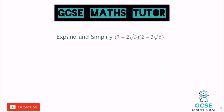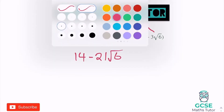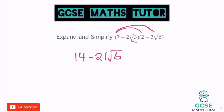Let's look at another one. Expanding: 7 times 2 is 14. 7 times negative 3 root 6 is negative 21 root 6. On to the bottom: 2 root 3 times 2 — that's positive 2 root 3 times 2 — so positive 4 root 3. And 2 root 3 times negative 3 root 6: 2 times 3 with a positive times negative gives negative 6, and root 3 times root 6 gives root 18. So we have negative 6 root 18.